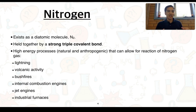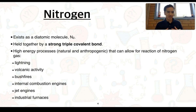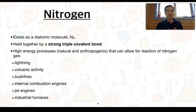Nitrogen, being the most abundant gas, exists as a diatomic molecule — two atoms covalently bonded together, held by a very strong triple covalent bond. This means you're going to need large amounts of energy to break that bond. High energy processes, which can be natural and anthropogenic, could allow for the reaction of nitrogen gas with other reactants.